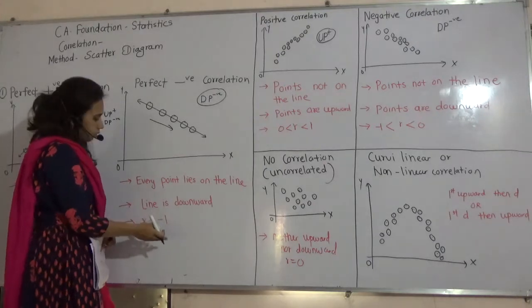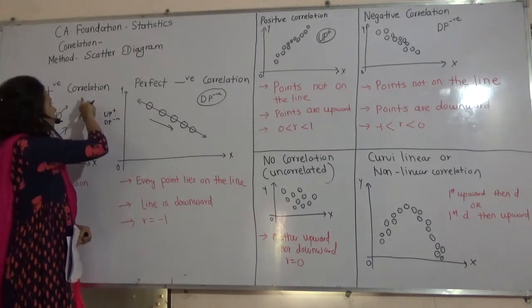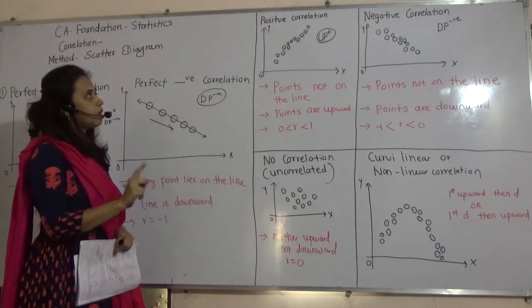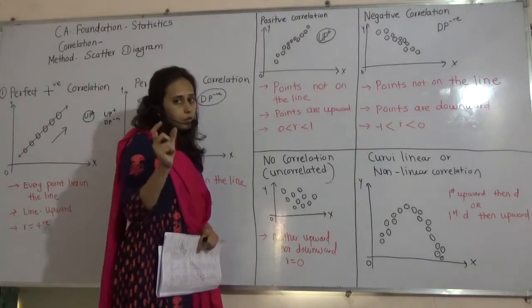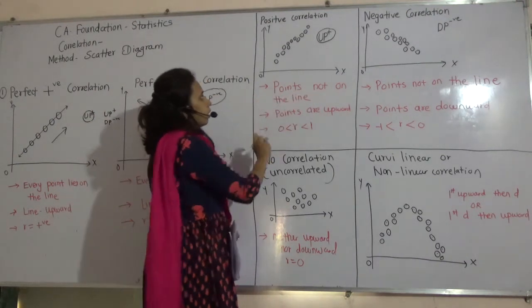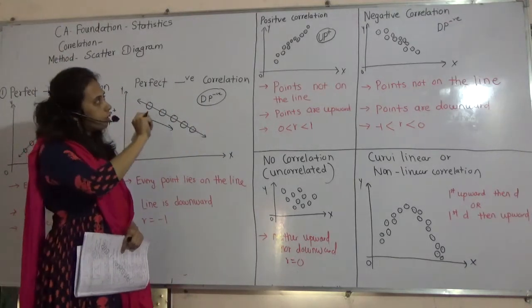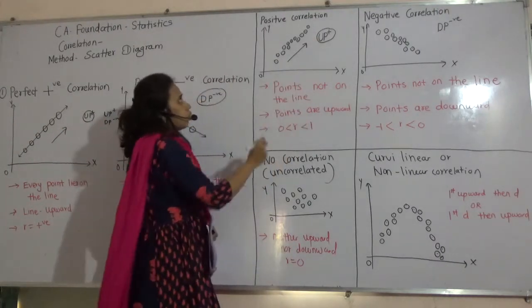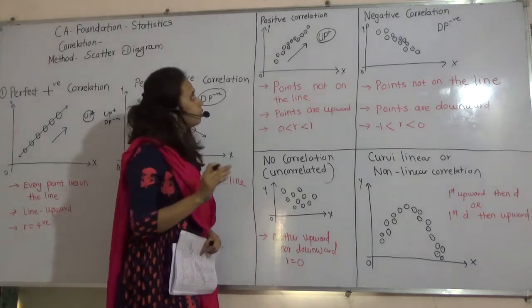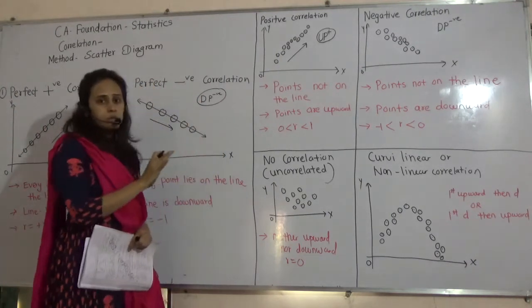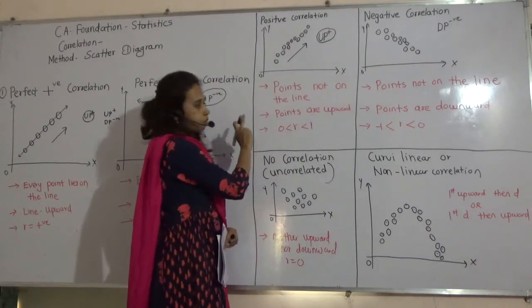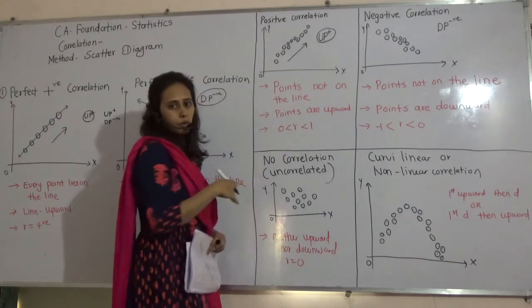That is, perfectly positive correlation and perfectly negative correlation. Next, instead of perfectly, they have used only positive correlation. Now, they have not used perfectly because now the point is not on the line. Earlier, it was on the line. Not on the line. But, it looks upward only. Still, it is upward. So, it is called positive correlation. Perfectly, they lie on the same line. Here, only positive, not on this line. But, it looks upward only. The movements are upward only. And R is, in that case, it is plus 1. But, here, less than 1 but more than 0.